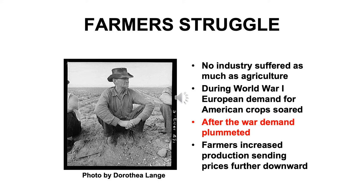Farmers were left owing money but not making as much for what they grew. They tried to produce their way out — grow more. But if a bushel of wheat dropped from a dollar to 75 cents, they had to grow more bushels to make up the difference. Supply and demand says that if you supply more and demand isn't there, prices keep falling. By the time the stock market crashed, about a third of America's farmers were already in bankruptcy.